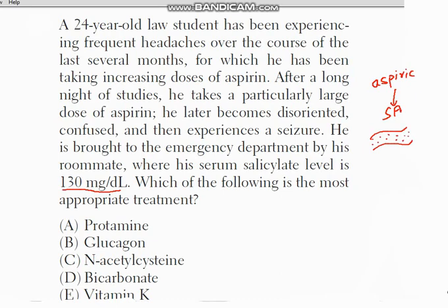Now we have to remove this out of the body. We have to increase the elimination or excretion of the acid into the urine. There is a mechanism called the ion trapping mechanism that we have already studied.